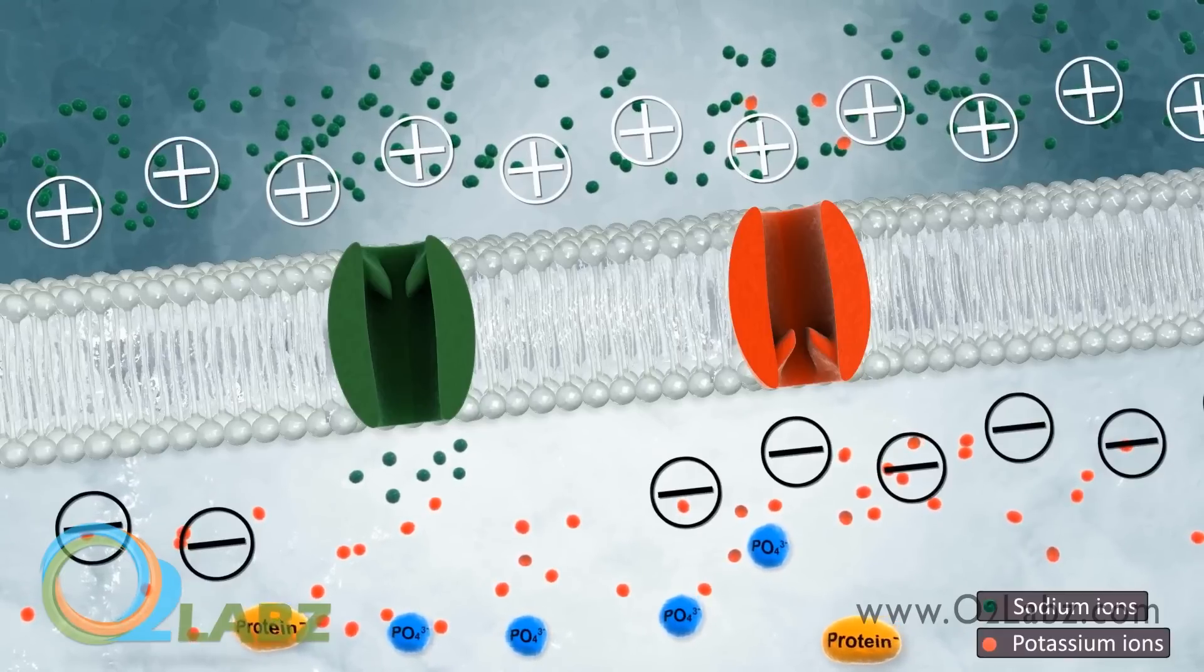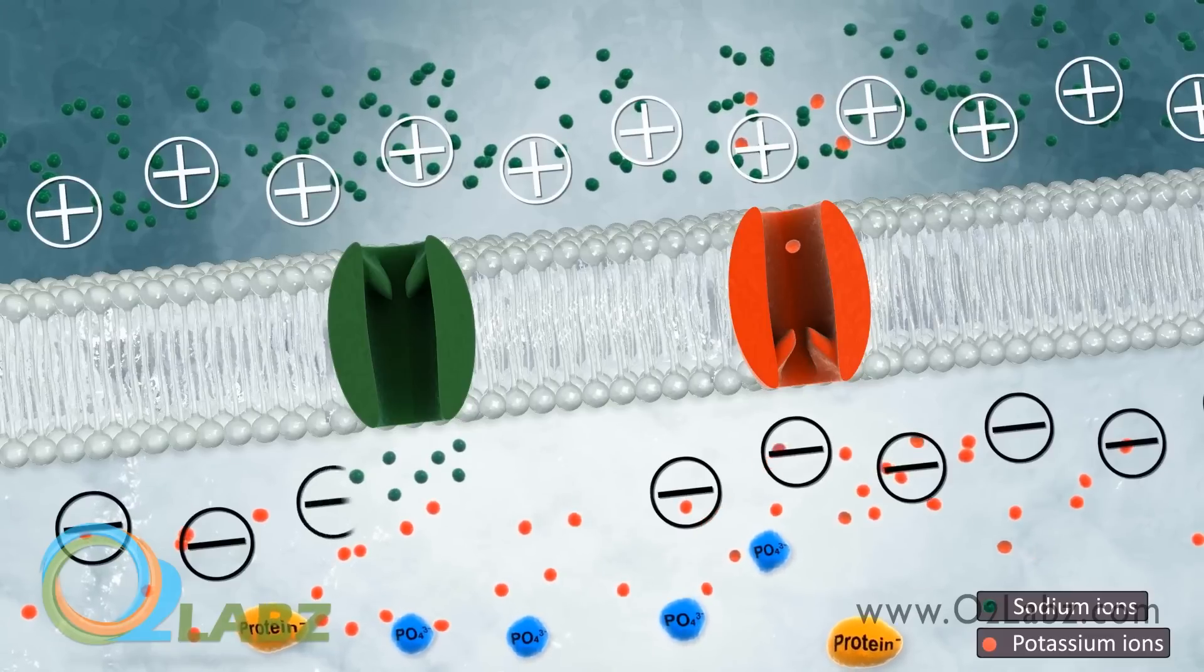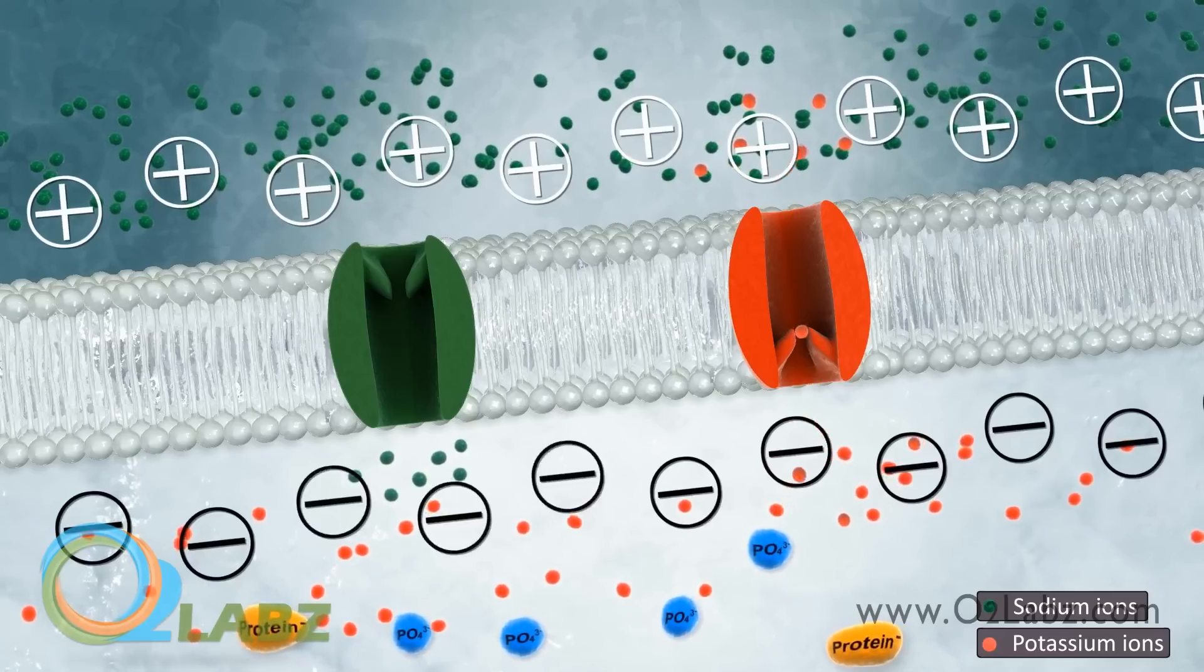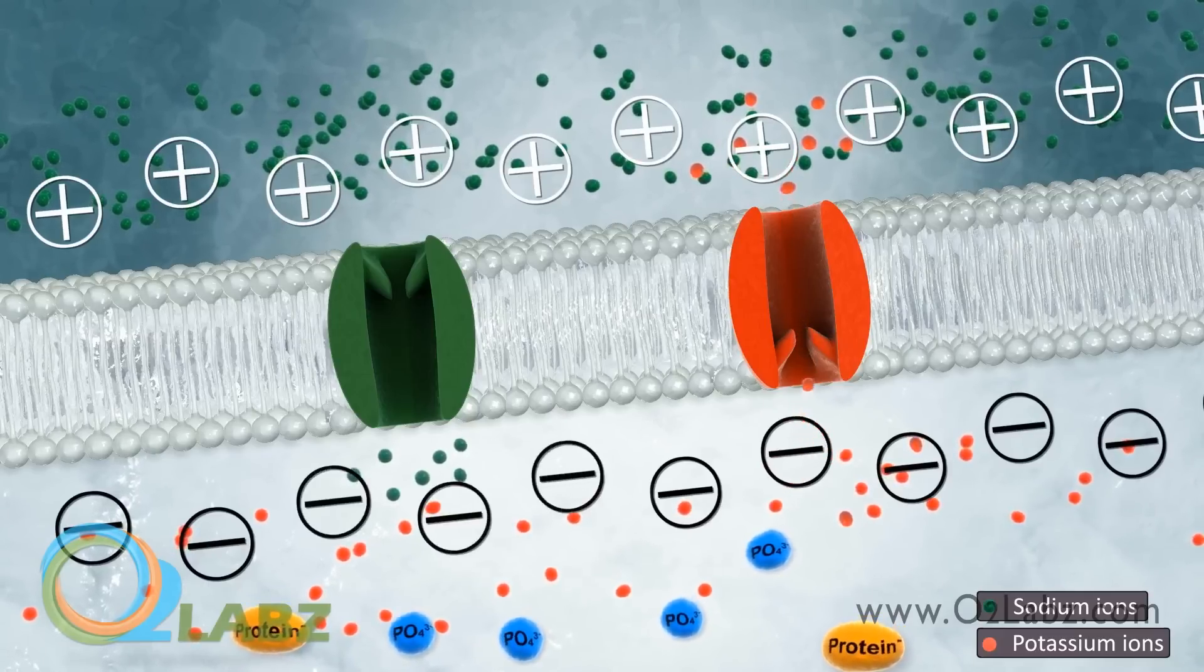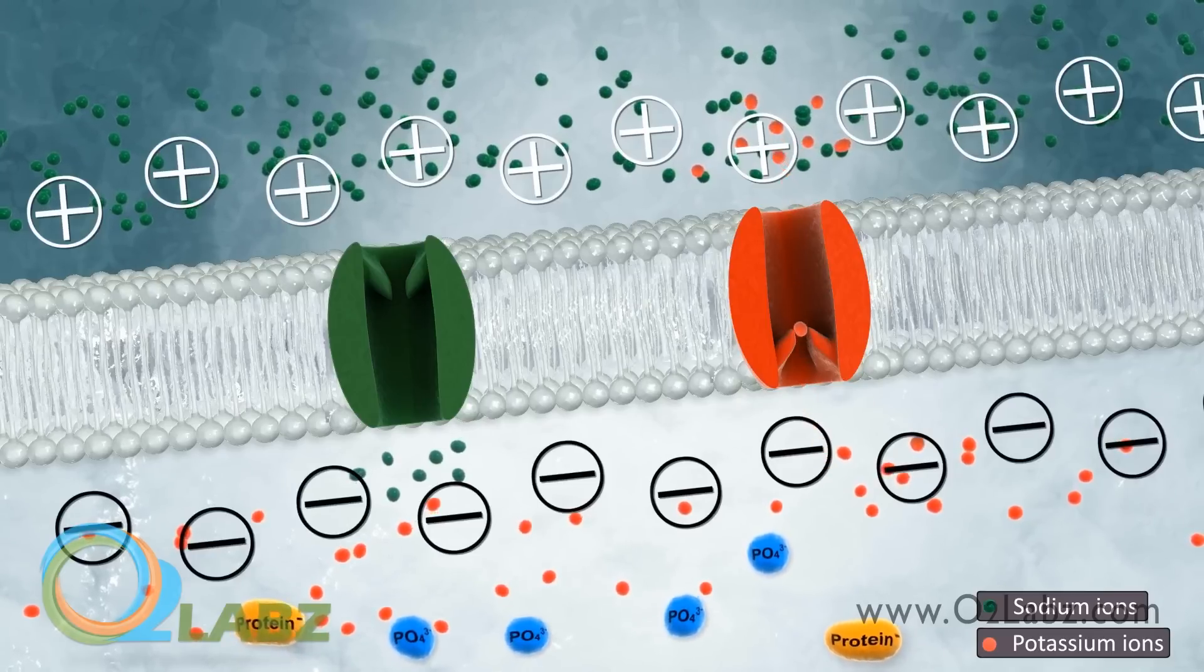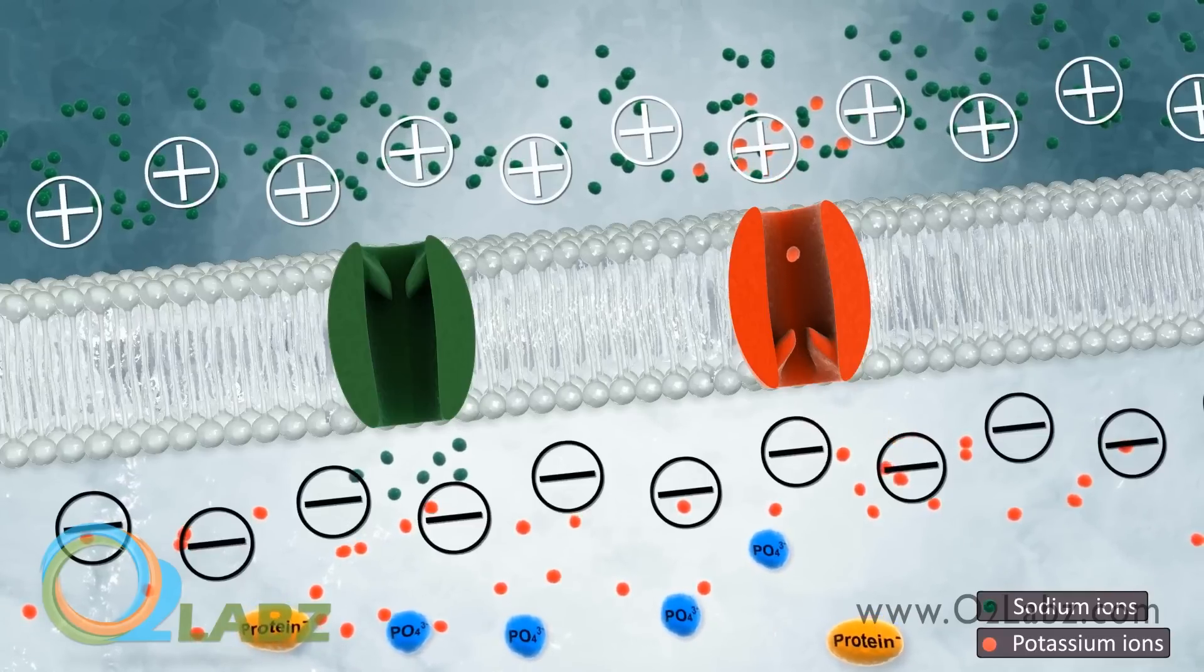Ions passively diffuse through a channel from higher to lower concentration. They are also attracted by opposite charges or repelled by like charges from other charged molecules. Thus, the direction of ion flow depends on the balance between both chemical and electrical forces acting on the ion at any given time.